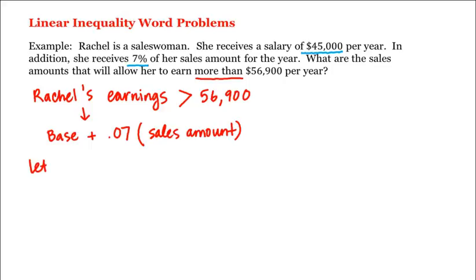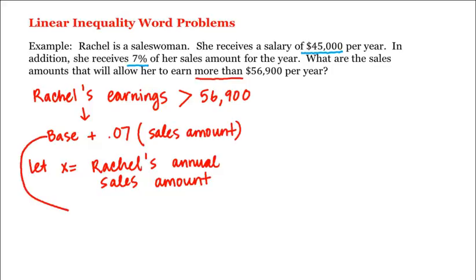Let's let X equal Rachel's annual sales amount. Therefore, her earnings would be the base salary of $45,000 plus 7% of X.